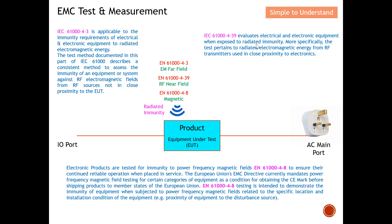IEC 6100-4-39 evaluates electrical and electronic equipment when exposed to radiated immunity, specifically pertaining to radiated electromagnetic energy from RF transmitters used in close proximity to electronics. This test simulates a real-world scenario where your device operates side by side with another device that radiates a significant amount of electromagnetic waves, ensuring your EUT can still function even in that harsh environment.